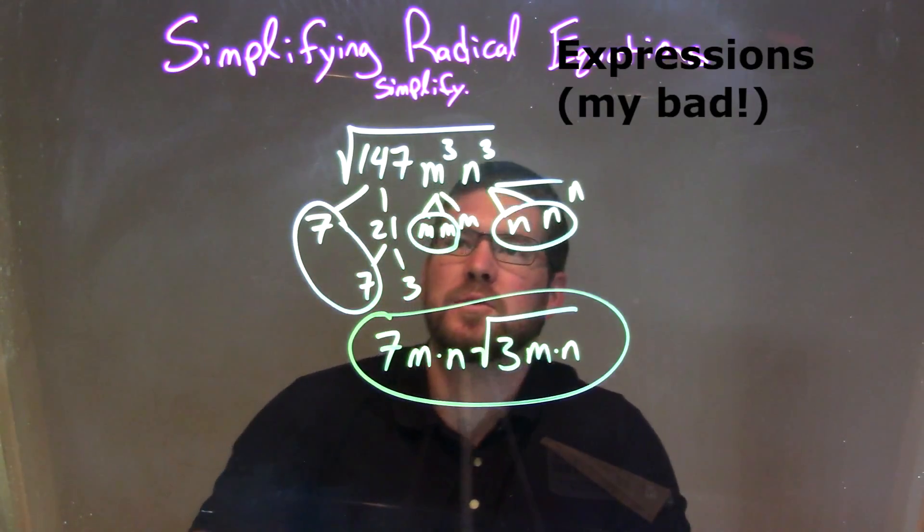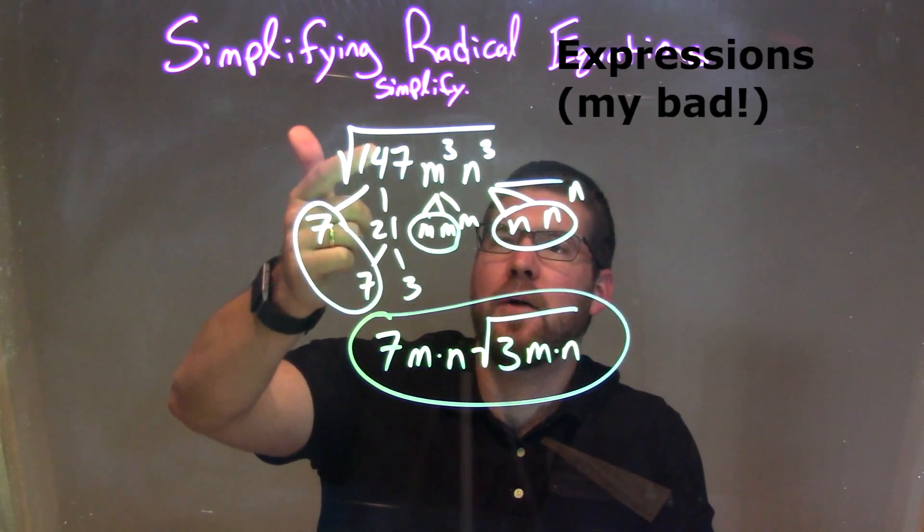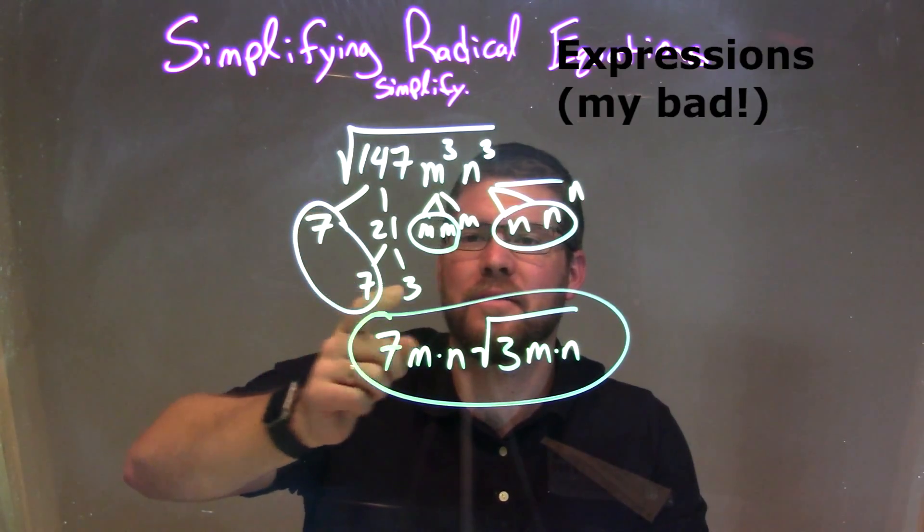So let's recap. We're given the square root of 147m to the third n to the third, and we needed to simplify it. So to do that, I've prime factorized, I guess that's a word, the prime factorization of 147, which is 7 times 7 times 3.